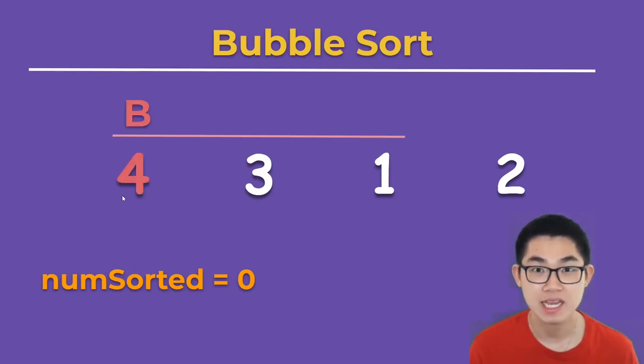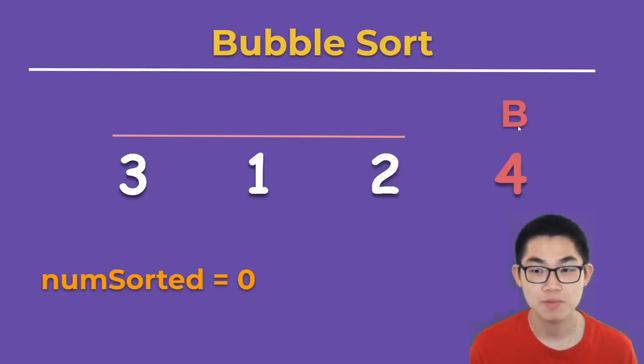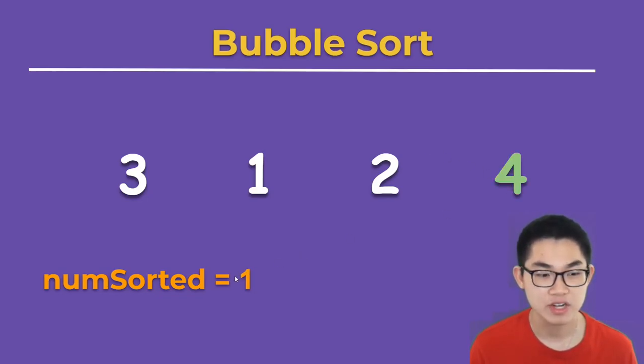We put b on the beginning of the array, so b is 4. Now 4 is larger than 3, so we swap them. 4 is larger than 1, so we swap them. 4 is larger than 2, so we swap them. Now b is outside of the line, so you can see that 4 is in its correct place. Then we increment numSorted.